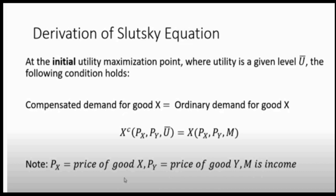In functional notation, the compensated demand function x_c is written as a function of px, py, and u-bar — that is, a function of the price of x, the price of the related good y, and utility, where utility is held constant. The ordinary or uncompensated demand function is x as a function of px, py, and n, where n stands for money income.